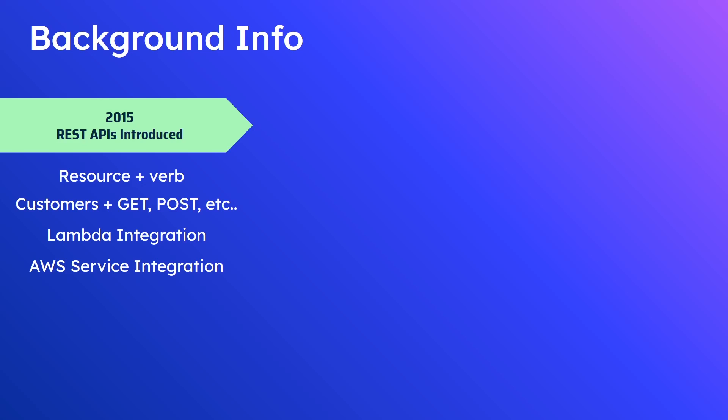The problem with REST APIs is they tend to be a little heavy — they come with a lot of bells and whistles. If you just want a lightweight API to call some function on the back end or a database, you suffer some latency overhead as a result. So not always the best choice, but no real other option existed for API hosting using API Gateway.